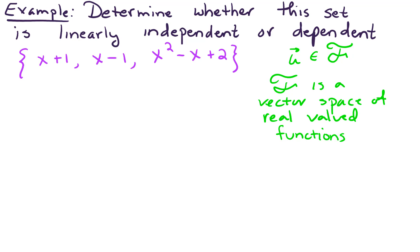What that amounts to is we want to check if there are some C sub i's. So C1 times our first vector plus C2 times our second vector plus C3 times our third vector, x squared minus x plus 2. We want to see if that equals zero, the zero vector.